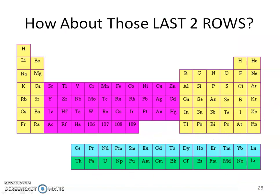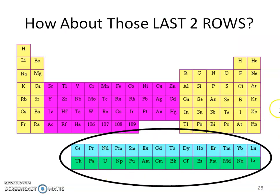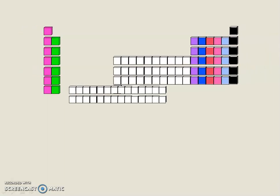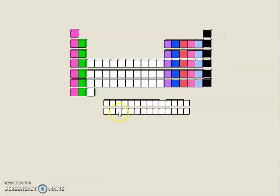All right, how about these last two rows of the periodic table? I want to remind you that the periodic table really should look like this, but they take those two parts of the row, six and seven, two parts of the period, six and seven, and kind of pull them out. Again, it's just to save space.